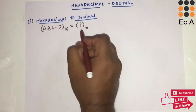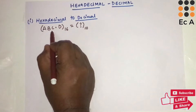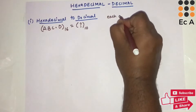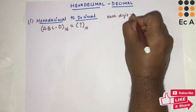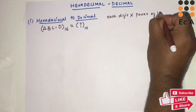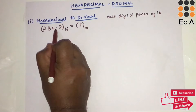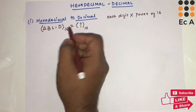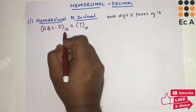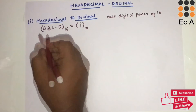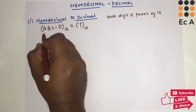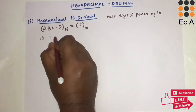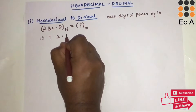To convert from hexadecimal to decimal, we need to multiply each digit in the hexadecimal number by a power of 16. From the hexadecimal point towards the left-hand side, each digit is multiplied with a positive power of 16, and towards the right-hand side each digit is multiplied with a negative power of 16. Before converting, let us write the equivalent values: A is 10, B is 11, C is 12, and D is 13.